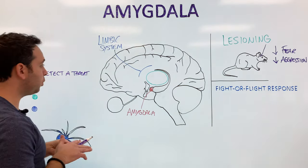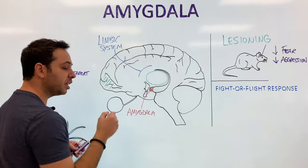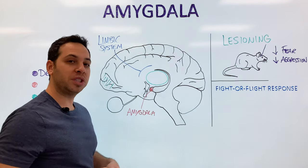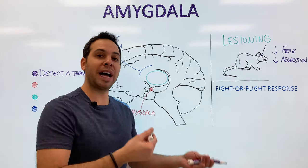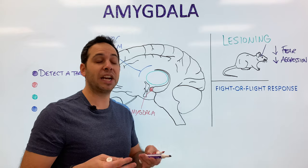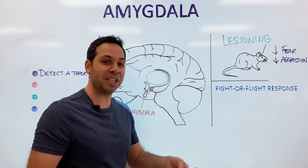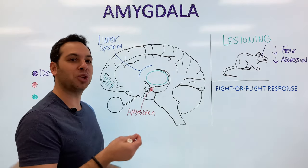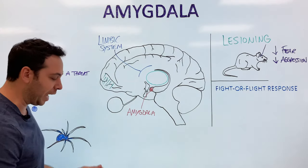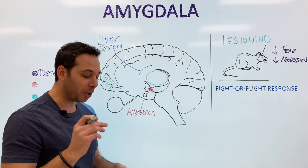What is the amygdala hijack? Essentially, our frontal lobe — where logic and rational thoughts take place — gets overwhelmed by the amygdala. In other words, your emotions take over logic. That's why people are afraid of public speaking — that's not really a threat to you. You're not going to get harmed public speaking, but your amygdala thinks you're actually in danger, and this takes over the rational part of our brain.